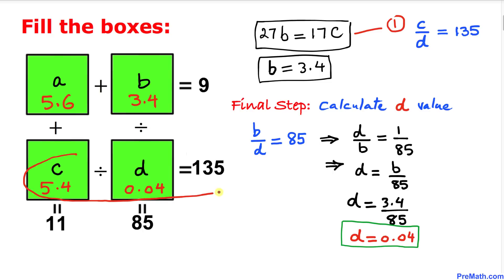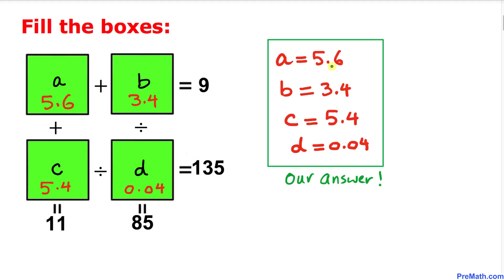Let's verify: c divided by d equals 5.4 divided by 0.04, which indeed gives 135. So our final answers are a equals 5.6, b equals 3.4, c equals 5.4, and d equals 0.04. Thanks for watching — please don't forget to subscribe to my channel for more exciting videos!